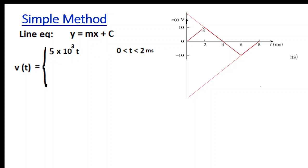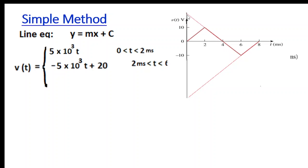For the second case, the slope is the same magnitude but negative. The line goes down by 10 from 2 to 4ms — only the sign changes to negative. If you extend the line, you can guess the Y-intercept: from 0 to 2 it was 10, so from 0 to 4 it would be double, giving 20. So we write V(t) = -5×10³·t + 20 directly.